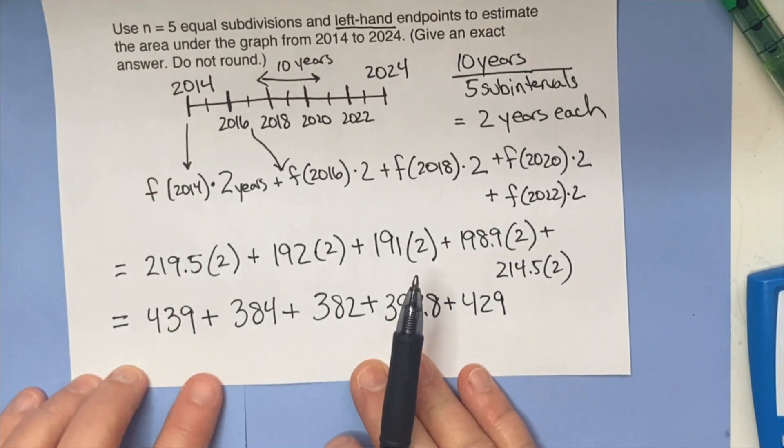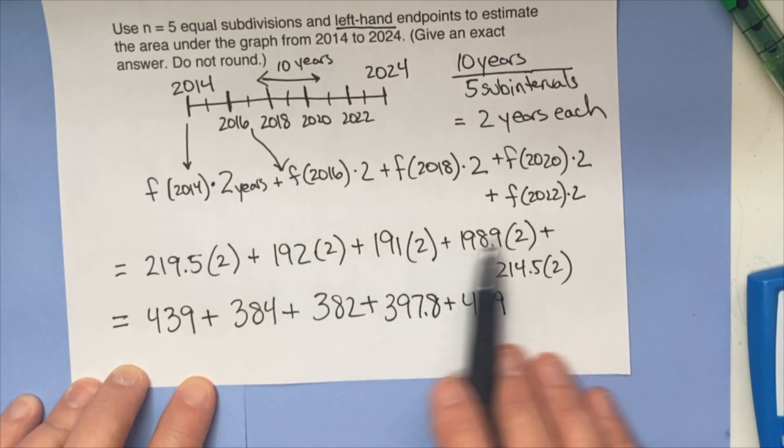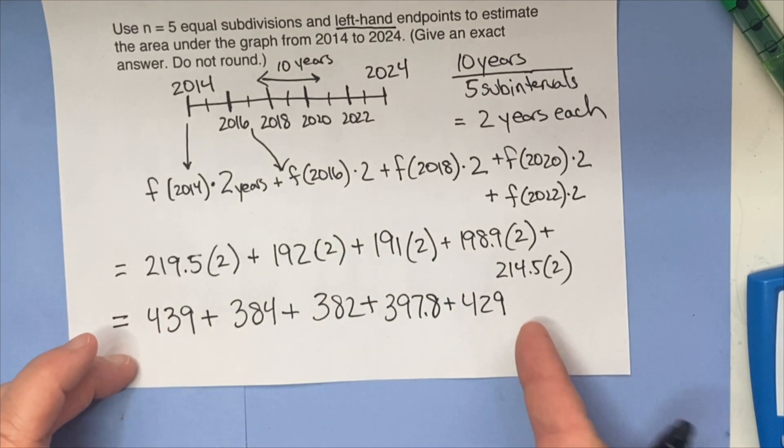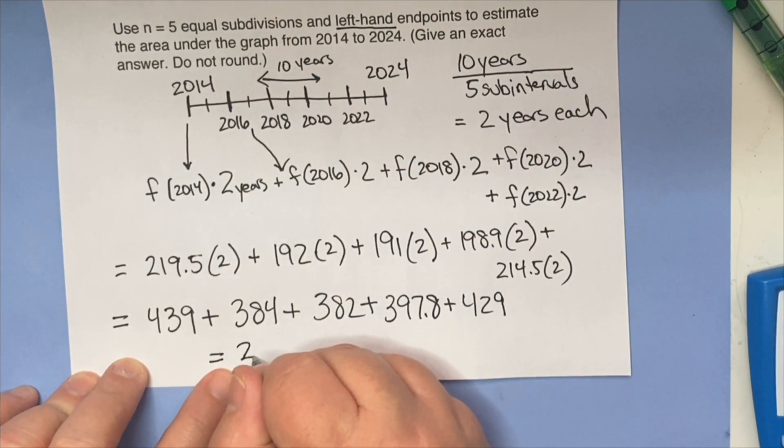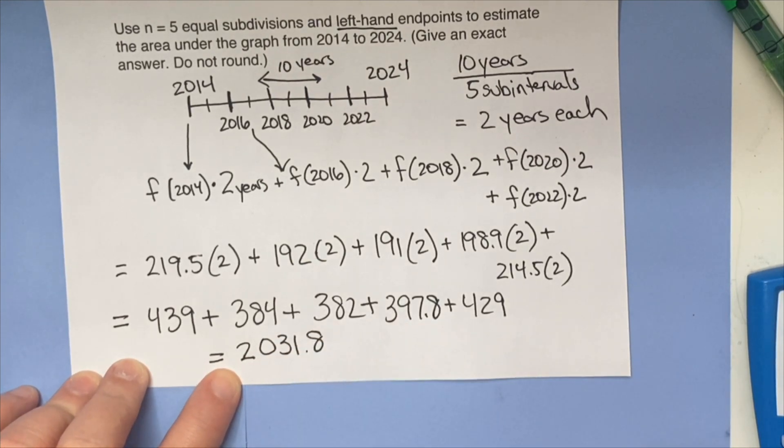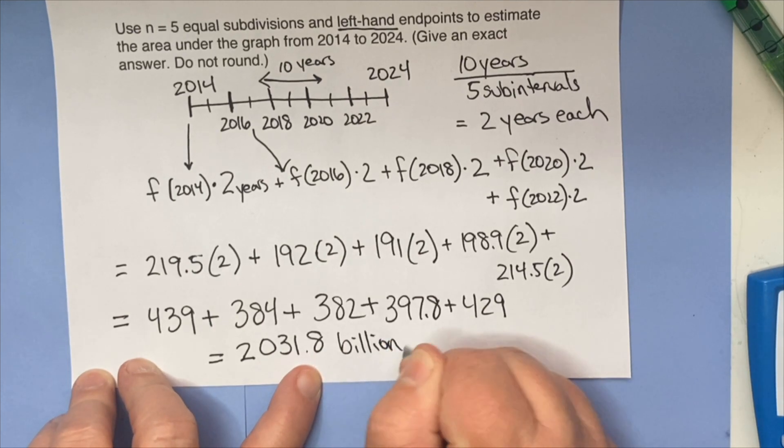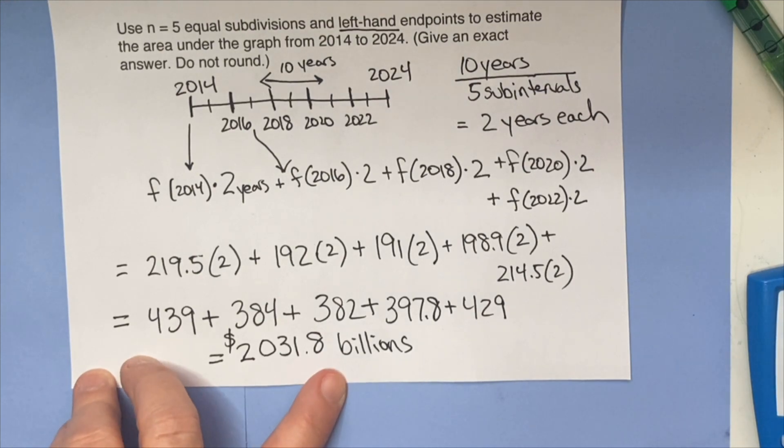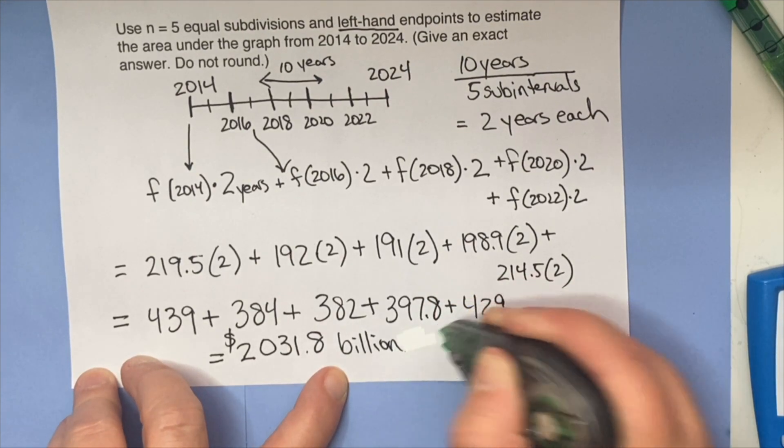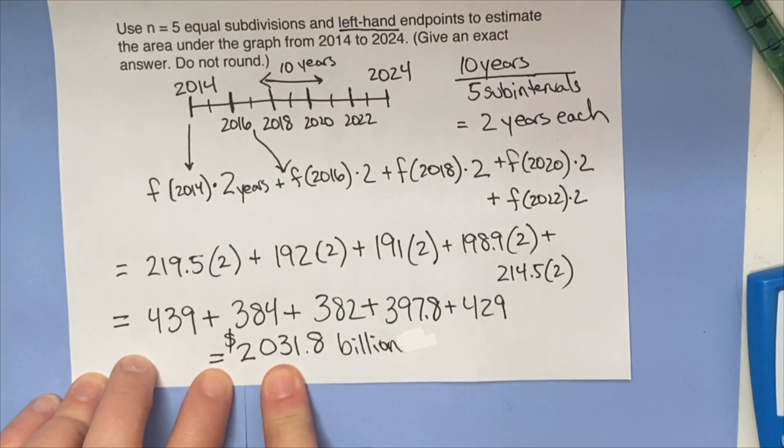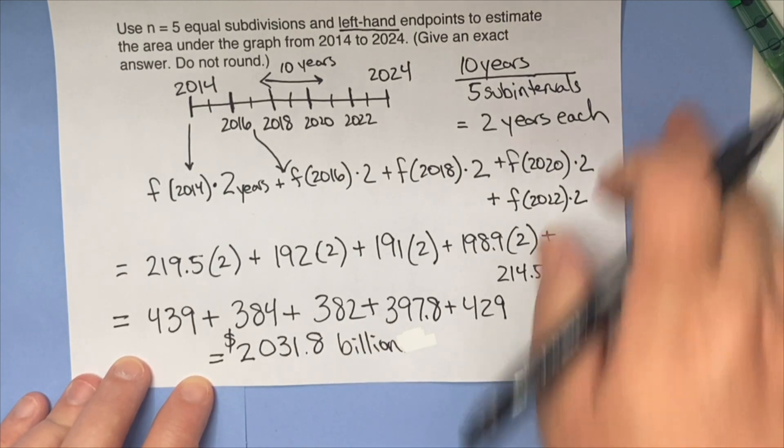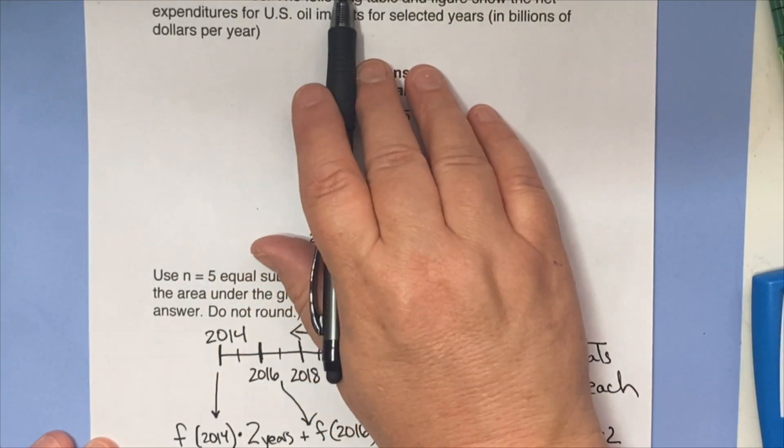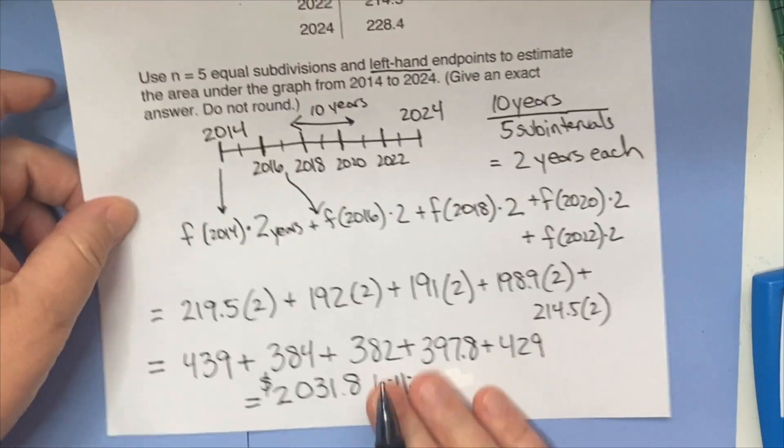So again, I'm using the information that we have as an estimate. I don't have all the information, so I do my best. And because I'm counting each one for two years, this is spanning 10 years of these imports. And through the magic of television, I know that the total here is going to be 2031.8. And this is in the billions. So 2031.8 billion, so we're into trillion dollars, $2 trillion in crude oil and petroleum products over the 10 years that we're covering.